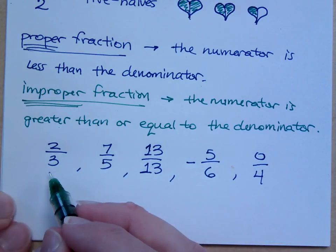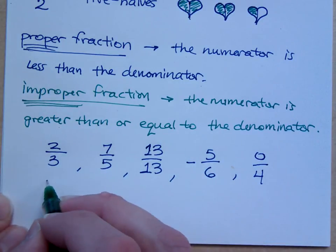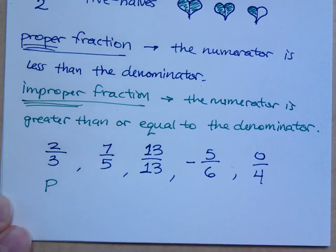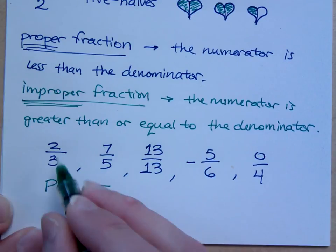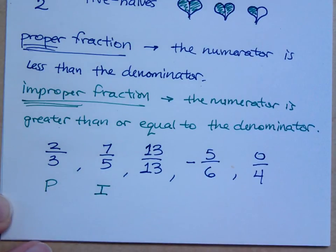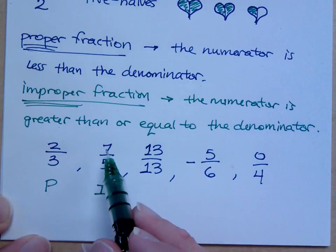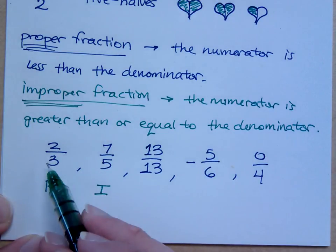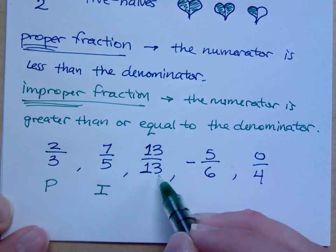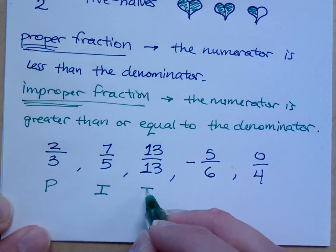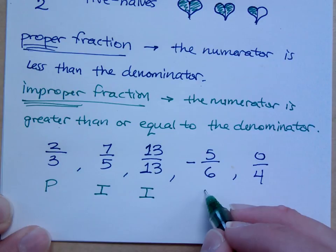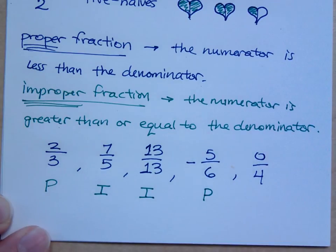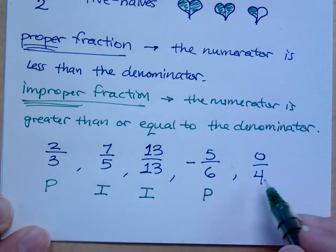So what is this first guy here, proper or improper? Proper. I'm just going to say P. Seven-fifths? Now why seven-fifths improper while two-thirds is proper? Seven is greater than five so it's improper. Two is less than three so that's proper. Here, what about this guy? This guy is an improper fraction. What about negative five over six? This guy is proper. We're going to talk more about the negatives and how they relate and how we use those. What about zero over four? This guy is proper, right?